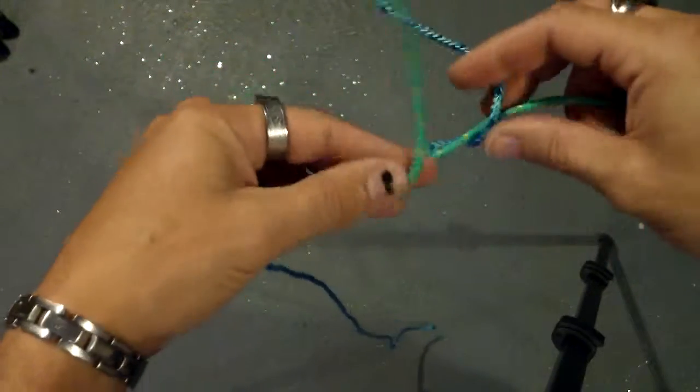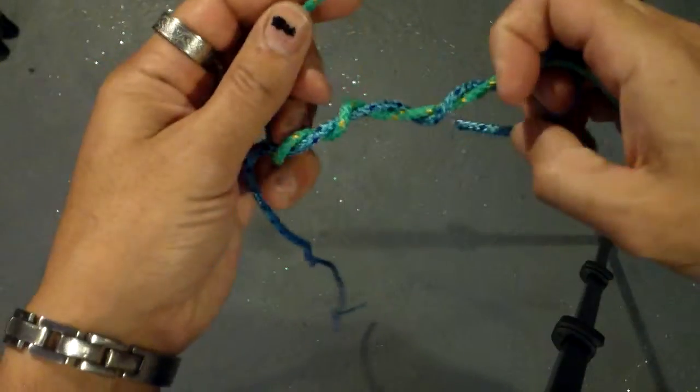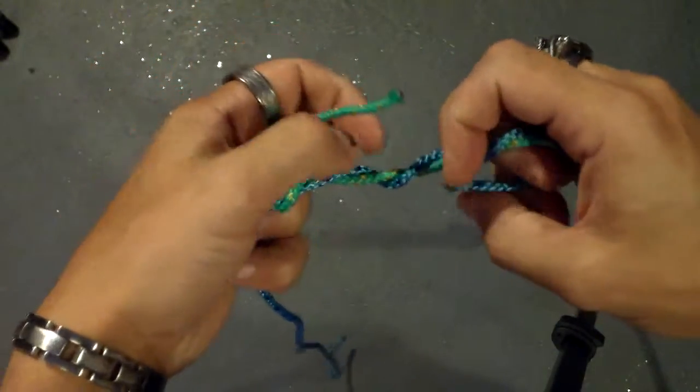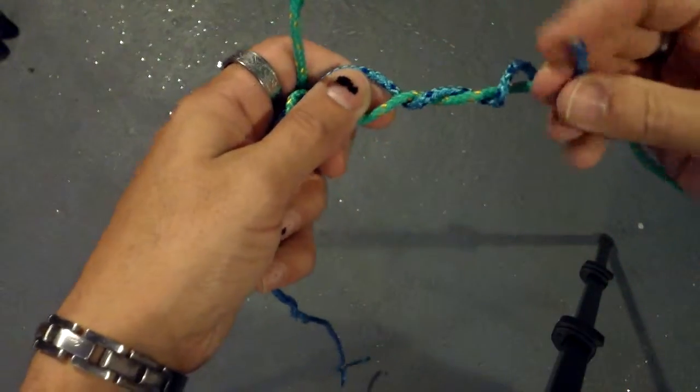You're going to twist them both five or six times. Then in the center of the twist, you're going to find the loop that's closest to the center. Open it up.